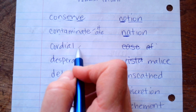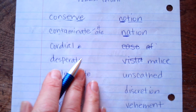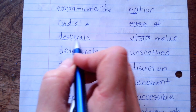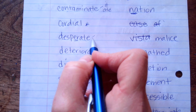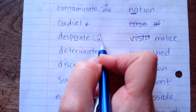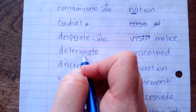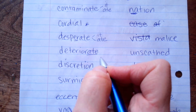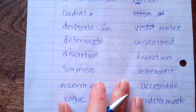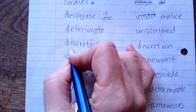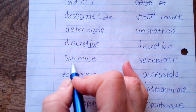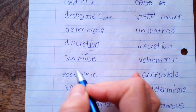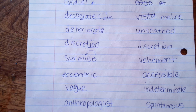This one is a sight word: cordial. E-R makes 'er' — desperate. Deteriorate or deterior-it? Deteriorate. T-I-O-N makes 'shun' — discretion. U-R makes 'er', I says its name — surmise.